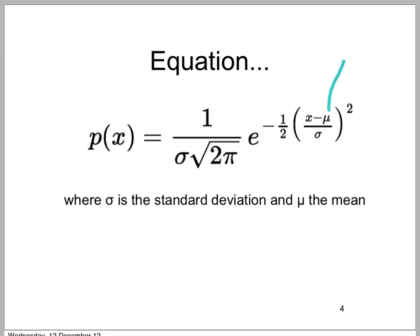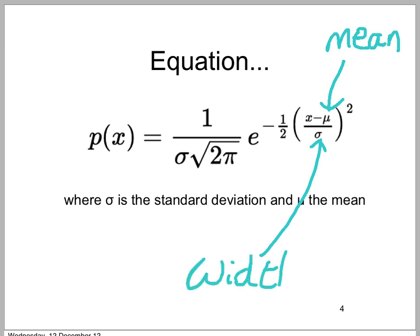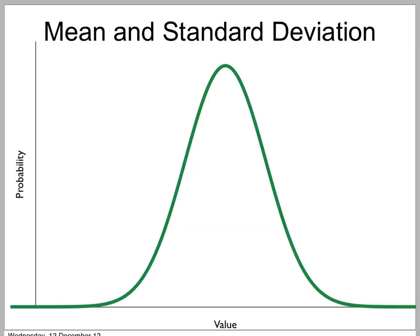Mu here is the mean. And sigma is the width, or standard deviation. If you look at an actual Gaussian curve, this value here will be mu, the mean. And that here is the standard deviation sigma.